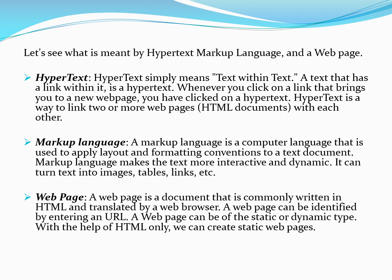Now let's see in detail what is meant by hypertext markup language and a web page. Consider Amazon's web page — Amazon has different categories: electronics, grocery, clothing. If you go to clothing, there is men's, kids', and women's clothing. There is a page inside a page, multiple pages. If there is text inside text, or page inside page, they are linked together using hyperlinks.